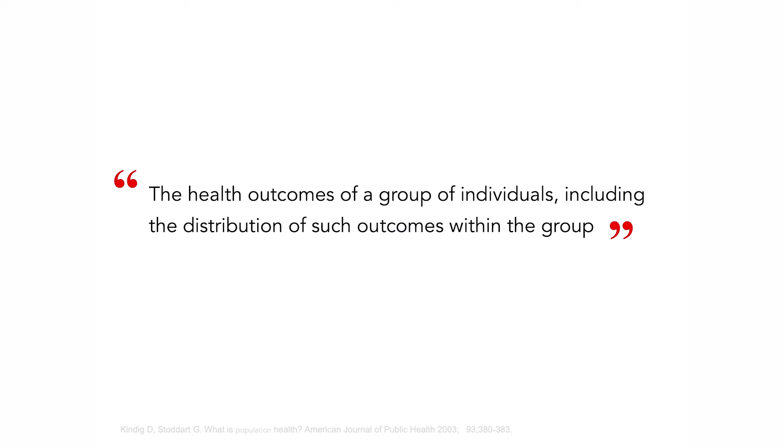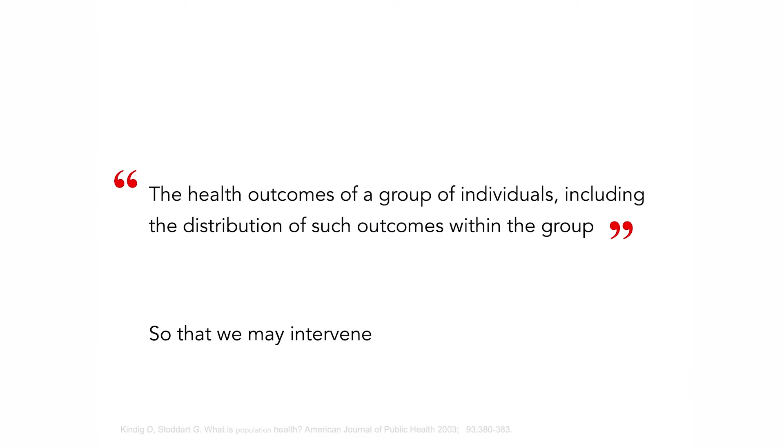What does population health mean? We're interested in health outcomes of groups, including the distribution of outcomes within groups — overall health outcomes of groups and distribution of those outcomes within groups. That perspective influences what we do and how we do it. As you'll see, this definition is what leads us to say that systems approaches have a contribution to make. And why do we do this? We do this so that we may intervene.